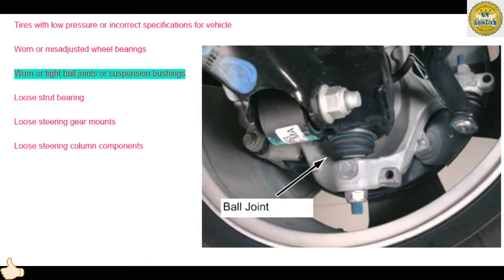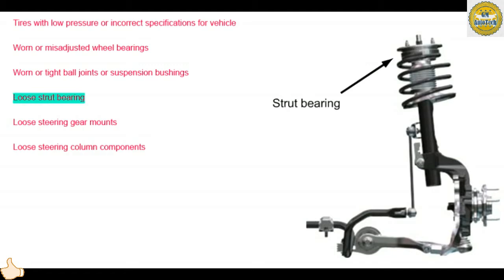At the top of the strut is a bearing that allows the strut to rotate inside the strut tower. This bearing supports the entire weight of the vehicle chassis at one corner of the vehicle. If the strut bearing develops an abnormal wear pattern or becomes loose, wandering may result. Rock the steering back and forth and watch carefully for any strut movement inside the tower. If you observe the strut wobbling inside the tower, the strut bearing plate may be worn, requiring replacement.